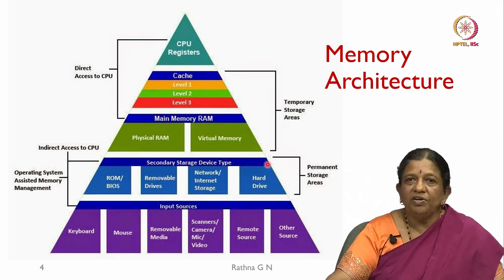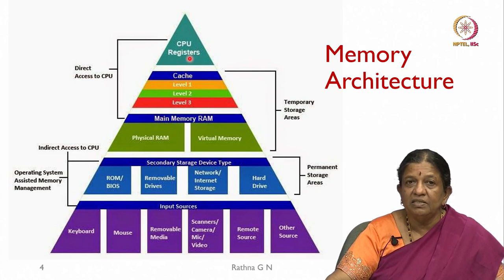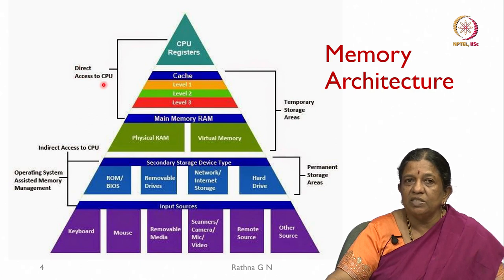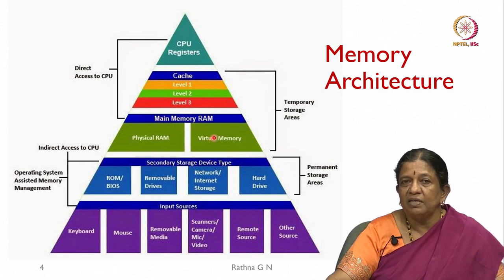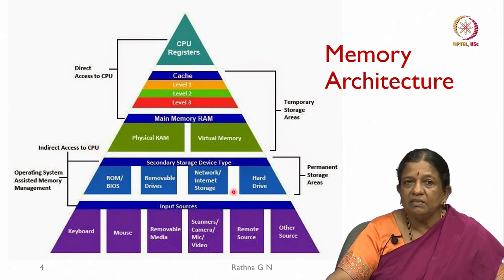Continuing with the memory architecture, the CPU is incorporated with registers and then cache levels 1, 2, and 3, which are direct CPU access. Temporary storages such as physical RAM and virtual memory have indirect access to the CPU — they do not have any direct bus connectivity, so we have to use the external bus to access these memories.